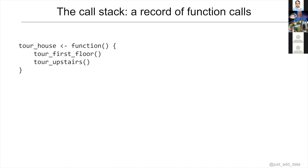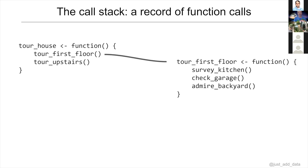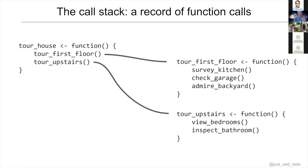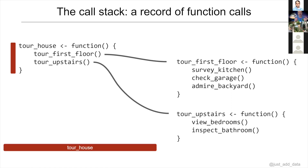We could describe the steps of touring a house with various function calls. When we tour the house, we might tour both the first floor and the second floor. On the first floor we might survey the kitchen, check the garage, and admire the backyard. Then on the second floor we view the bedrooms and inspect the bathroom.